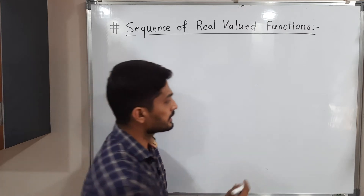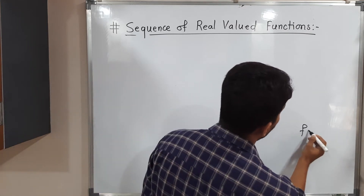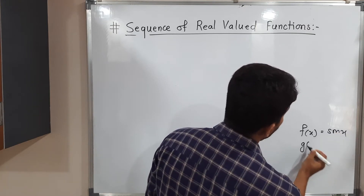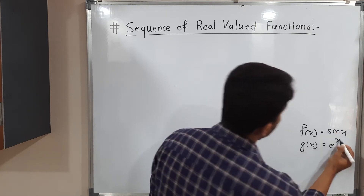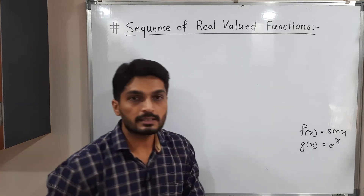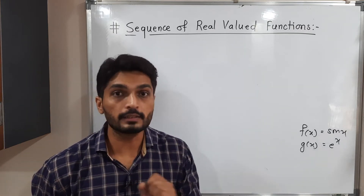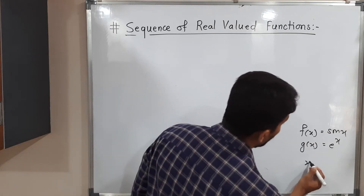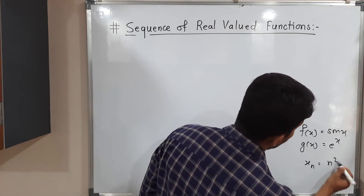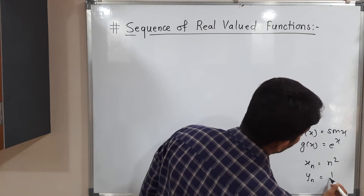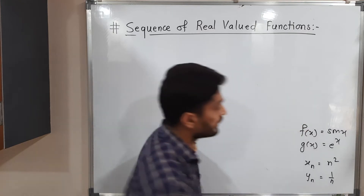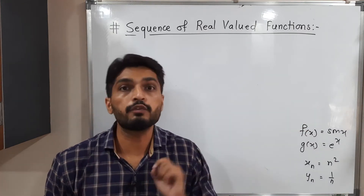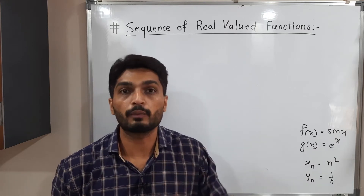When we consider any function, we write it like f(x) = sin x, or g(x) = e raised to x — that means x is a variable. When we consider a sequence, we write things like x = n squared, y = 1 by n — that means n varies. But when we talk about a sequence of functions, both x and n can vary.